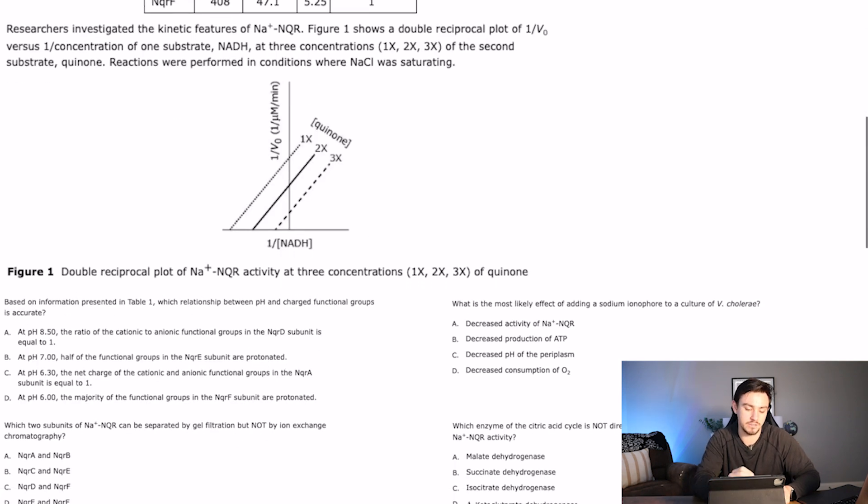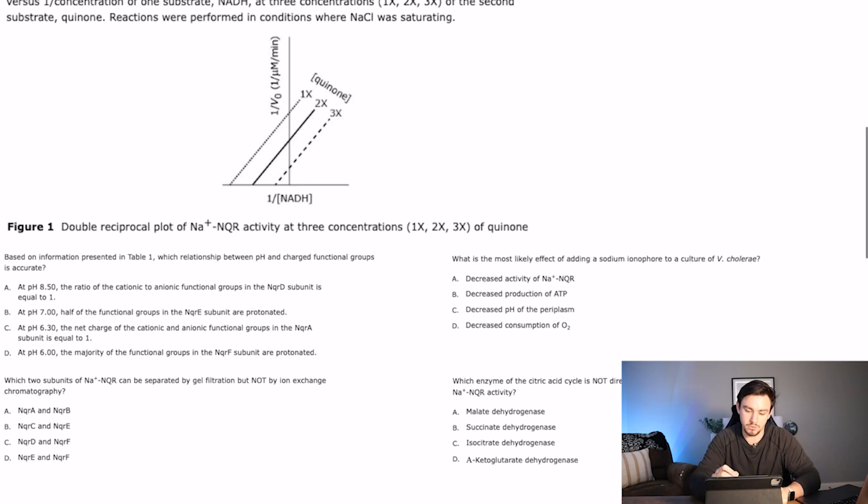Researchers investigated the kinetic features. I'm always interested in highlighting the word kinetic, because they will test you on kinetics frequently, but where they really will trip you up is they'll test you on kinetics, but they'll give an answer choice in equilibrium and try to make you think they're the same thing, and they're just not. So don't fall for that. Make sure you know when you're talking about kinetics versus when you're talking about equilibrium. Kinetics is the speed of the reaction. Equilibrium is kind of like how much. So figure one shows a double reciprocal plot of one over V-naught versus one over concentration of one substrate NADH at three different concentrations of the second substrate quinone.